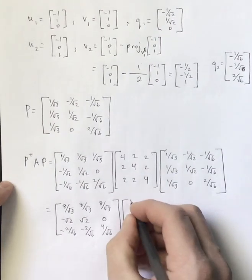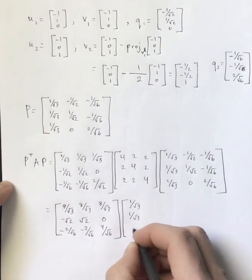And then, of course, I need to still multiply this by P at the end.